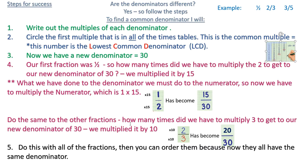Do the same to the other fractions. How many times did we have to multiply 3? So now we're going to look at 2 thirds. How many times did we multiply 3 to get to our new denominator of 30? So how many 3's make 30? Well, we obviously multiplied it by 10. So 10 times 3 was 30. So now we have to multiply our numerator. 10 times 2 is 20. So I've now got 20 thirtieths. So my half, my original half, has become 15 thirtieths. And my 2 thirds has become 20 thirtieths. So you can already see that a half is smaller than 2 thirds.